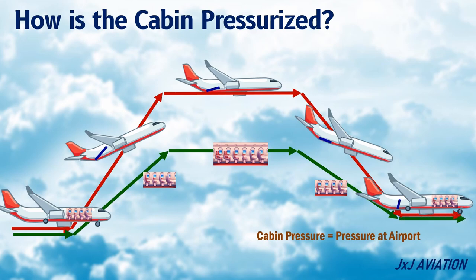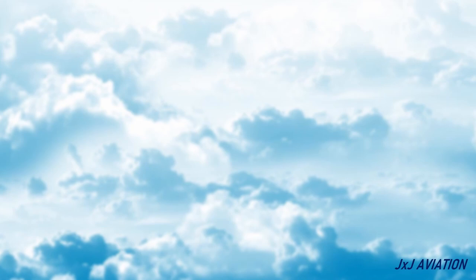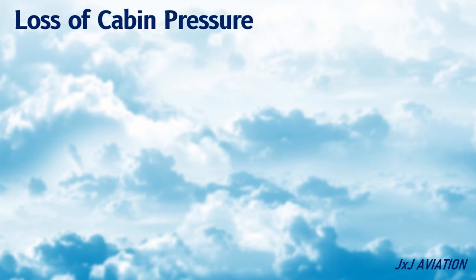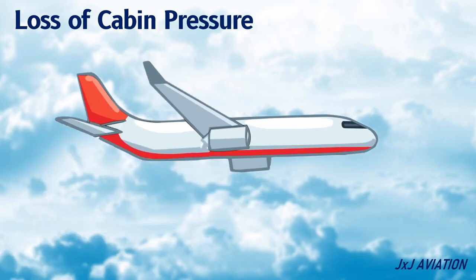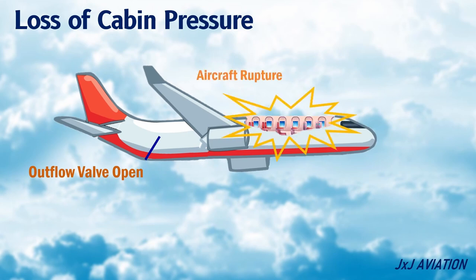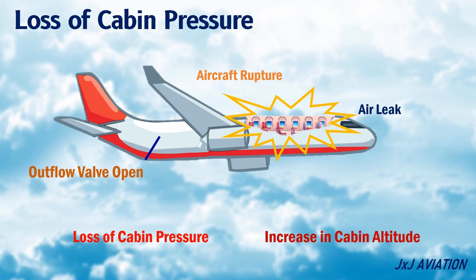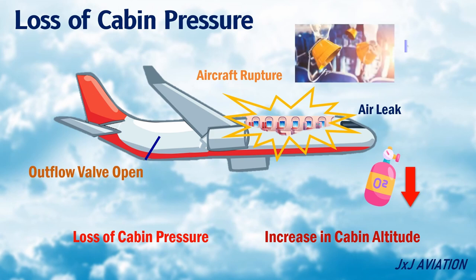The pressurization system normally works on the information received from the onboard flight computers. Now let's look at what is meant by loss of cabin pressure. Due to some malfunction, if the outflow valve stays open or if there is a significant rupture in the pressurized section of the aircraft, the air will leak out. This will lead to loss of cabin pressure and an increase in the cabin altitude. This also means that the oxygen available inside the aircraft will reduce and oxygen masks have to be worn to prevent hypoxia.